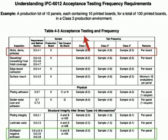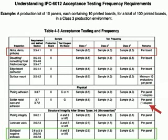So what we've demonstrated here is that the remarks column in Table 4-3 is really the key to understanding how many samples we need to evaluate in a lot to determine whether or not that lot is acceptable for shipment to the assembly house.